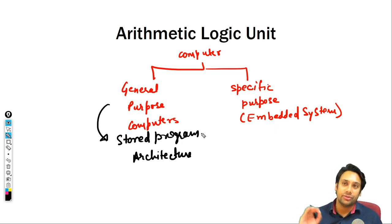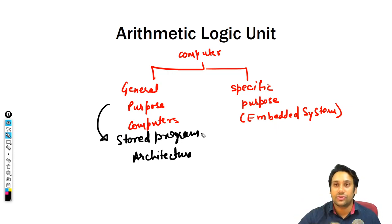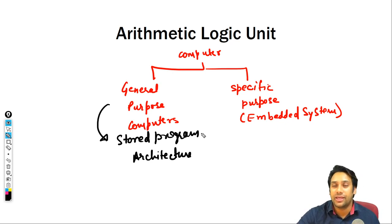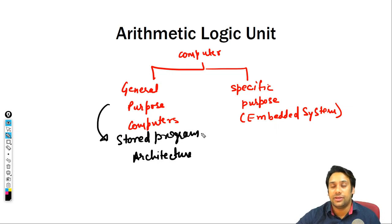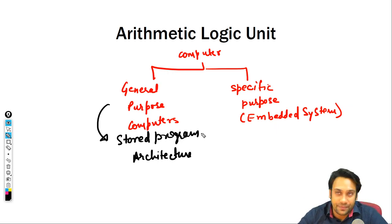In embedded systems, the programs are embedded in the hardware. Even in aircraft, you cannot have a stored program architecture because stored program architectures tend to be a little slow, so embedded systems are used there. In many industrial applications we use embedded systems, but for general computers that programmers use, we use a general purpose computer that follows stored program architecture.